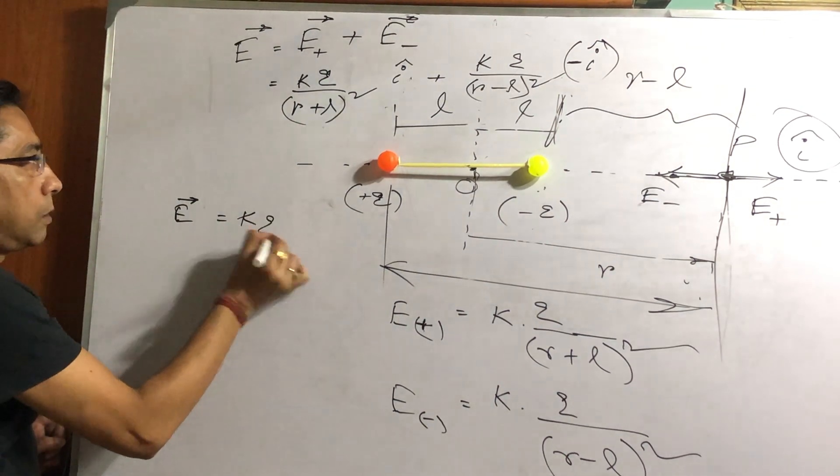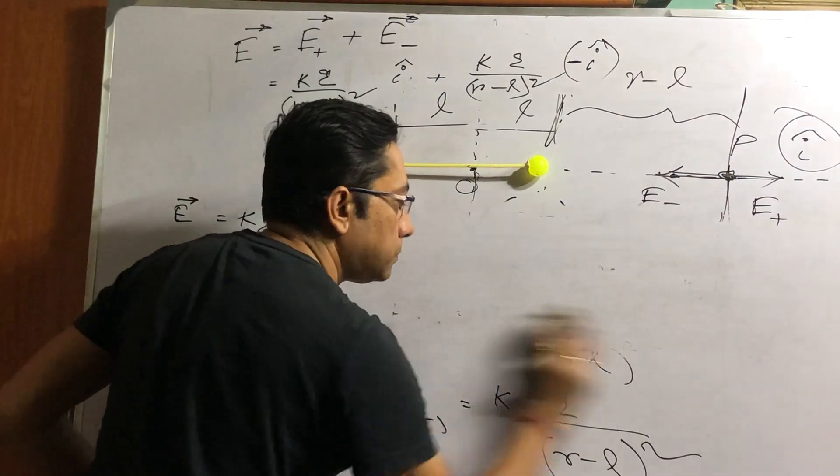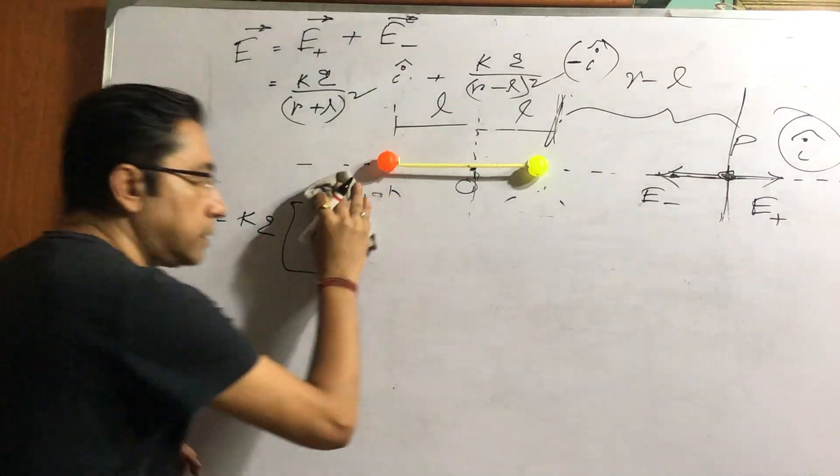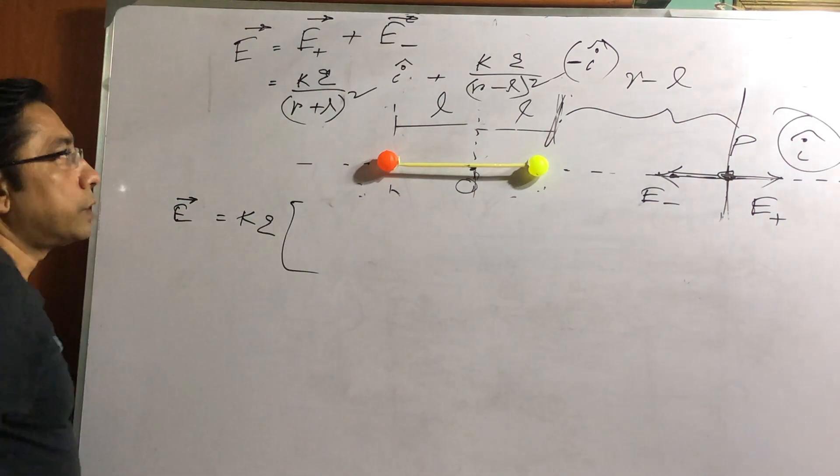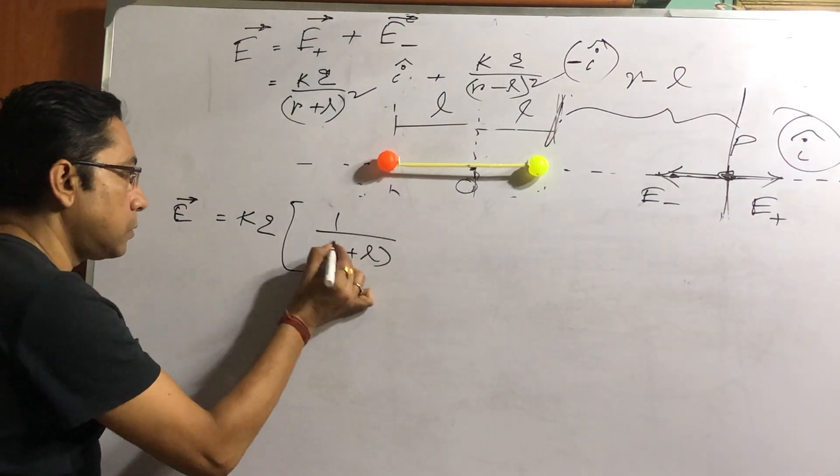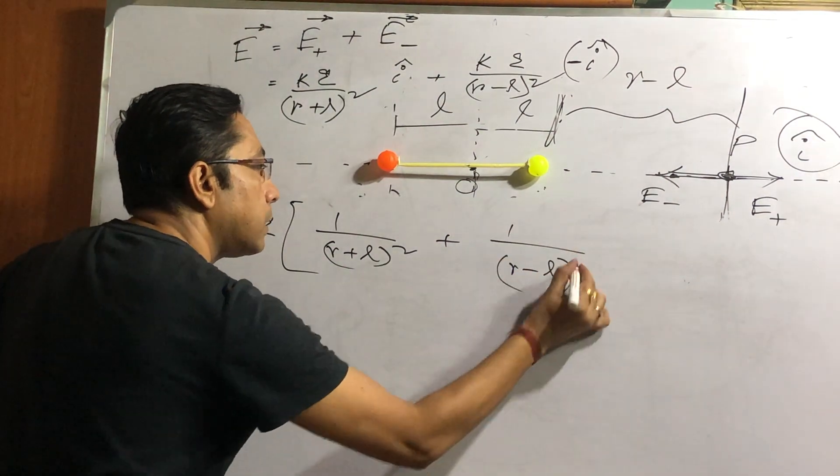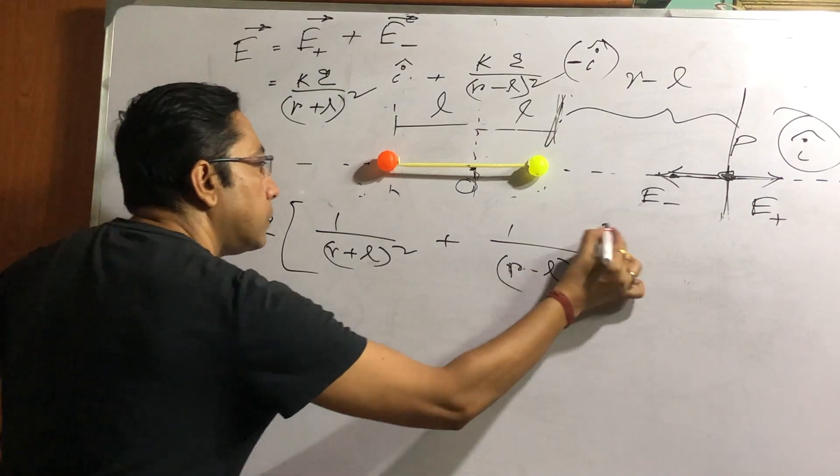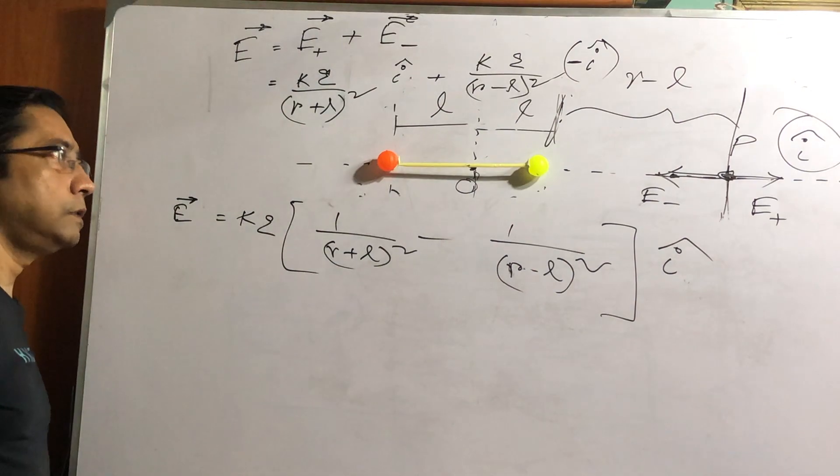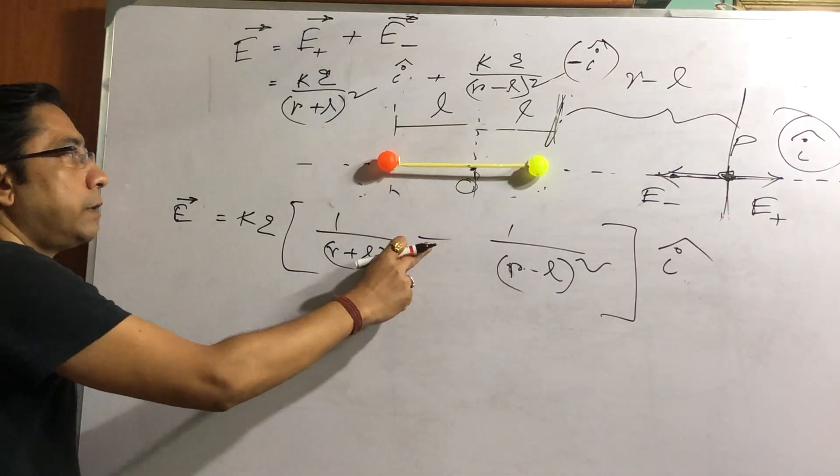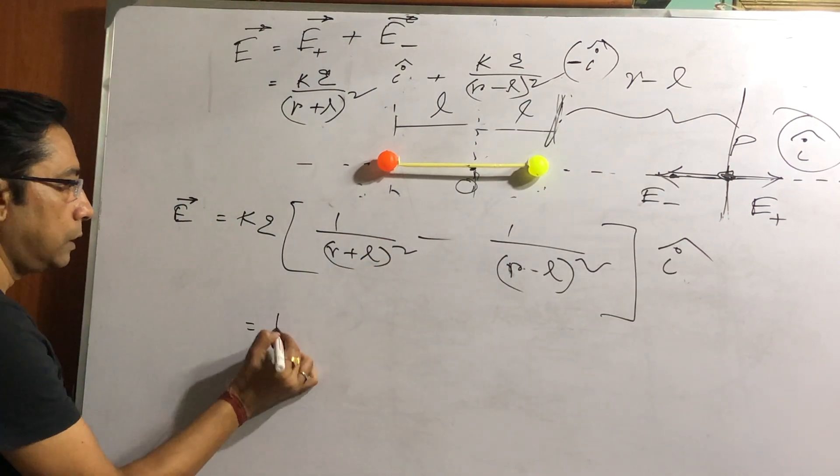So equals to, let us take K, Q common. I am erasing this part for ease of calculation. And let us make the board a little more black so that the contrast is nice. So K, Q common: 1 by (R plus L) whole square plus 1 by (R minus L) whole square. But I am making an adjustment here. I am writing i hat. I am doing this minus. Minus i hat comes here, so sign becomes minus and both of them have become i hat.